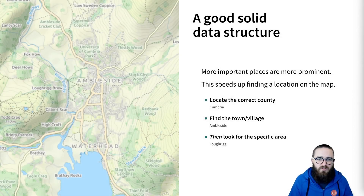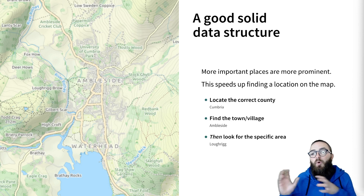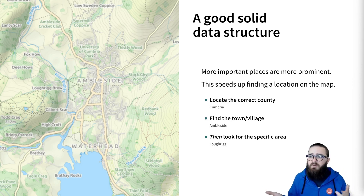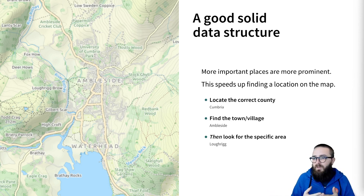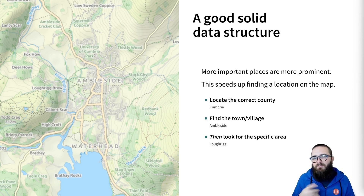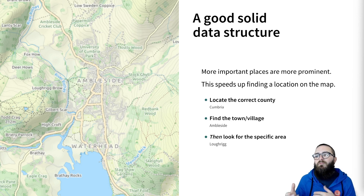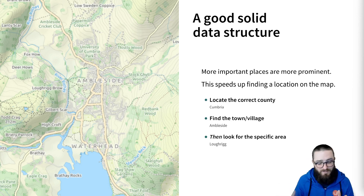We've also got a really solid data structure. Generally speaking, the more important the location, the more prominent its name will appear on the map, and this makes a lot of sense. If I want to find Loughrigg Fell, I'd have very little chance of finding it unless I first look for the county of Cumbria, then look for Ambleside, and finally for Loughrigg. The prominence of these place names therefore reflects the structure, making smaller places easy to find.